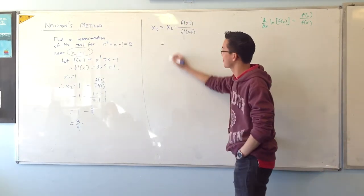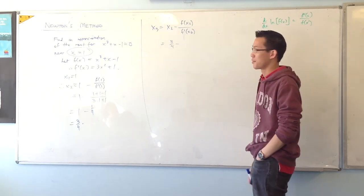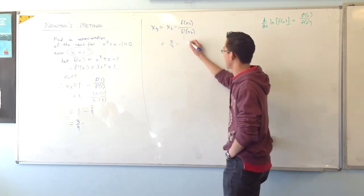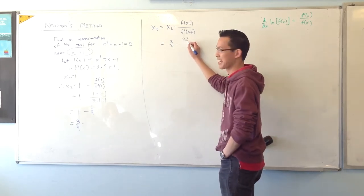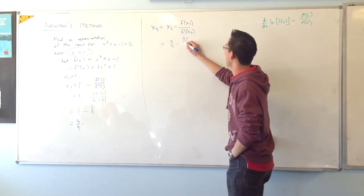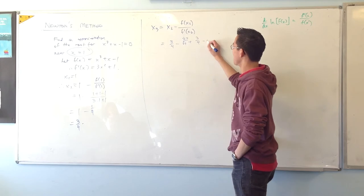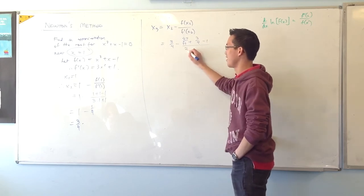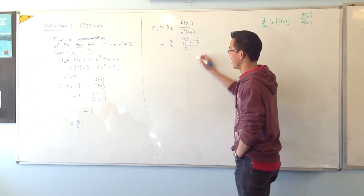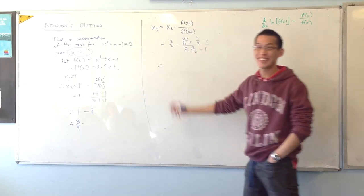Let's see here, 3 quarters minus, hmm, 3 quarters cubed, what's that? 27 on, okay, so you probably want to get your calculator out at this point. But I'm stuck writing until, what have I got? 64 plus 3 quarters minus 1 on 3 times, why did I do this to myself? 9 on 16 plus 1, okay, what do we actually get?